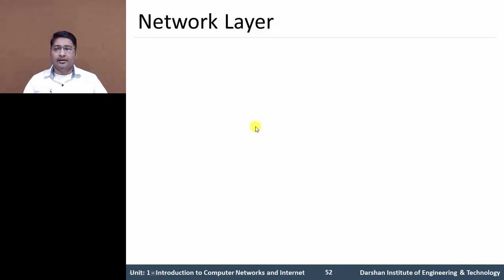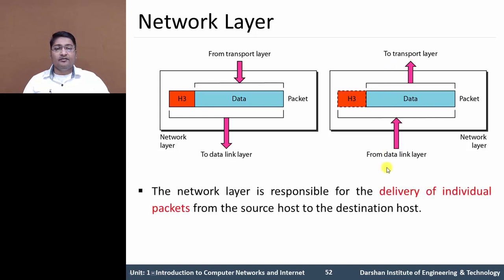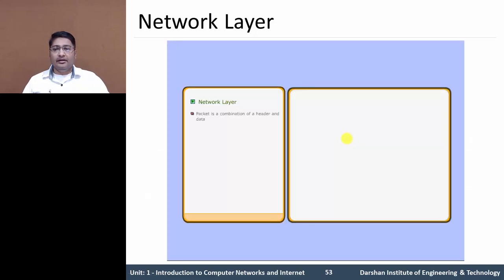The third layer, the network layer, receives data from the transport layer in the form of packets. At this level, header information H3 is added to the packet and sent down to the data link layer. At the destination, data comes from the data link layer, the header is removed at the network layer, and it is passed to the transport layer. This layer is responsible for the delivery of individual packets from the source host to the destination host.